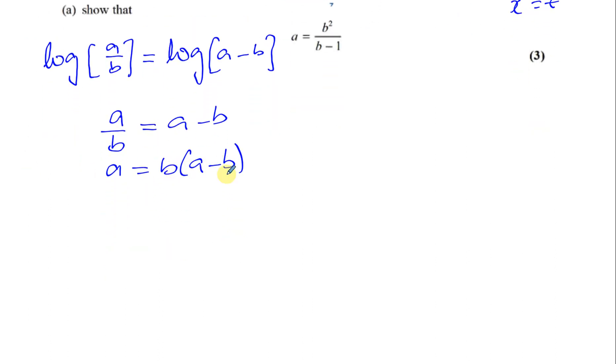So, we have A equals B times A minus B. Now, we can, we want the A to come together on one side because we want to make A the subject. So, let's just expand that. That's A B minus B squared.